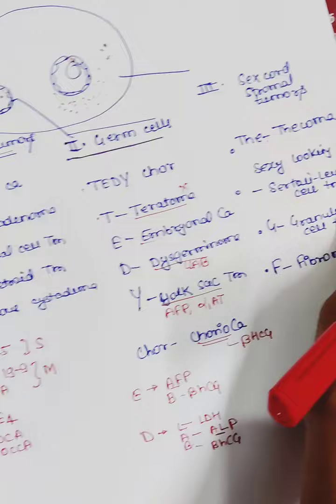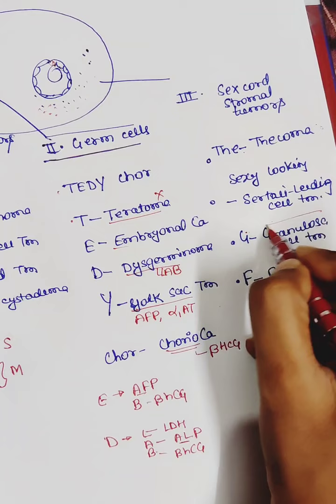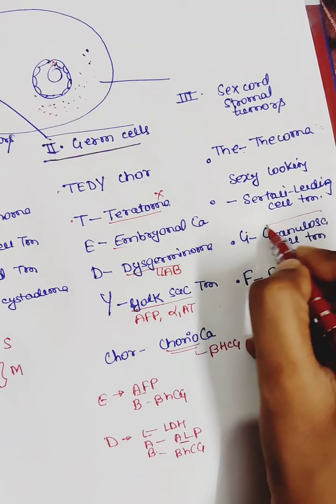And in sex cord-stromal tumor, the significant tumor producing tumor marker is granulosa cell tumor. The tumor marker of granulosa cell tumor is inhibin.